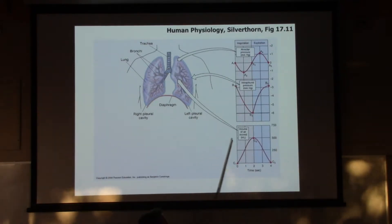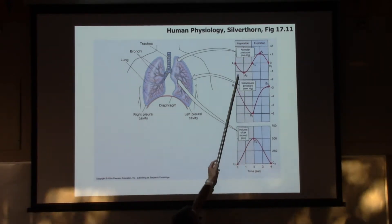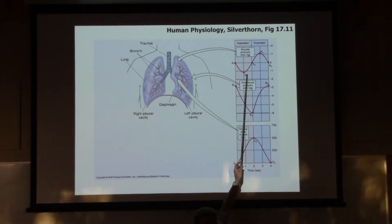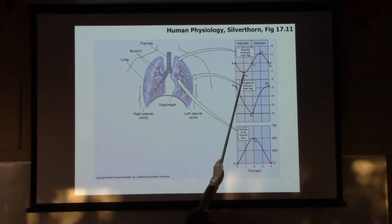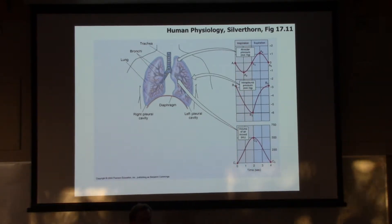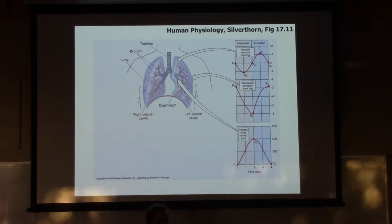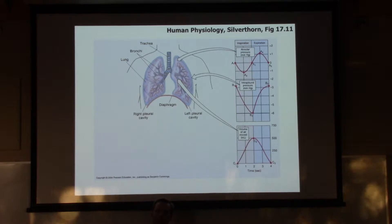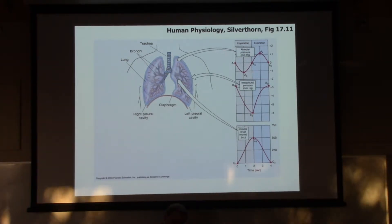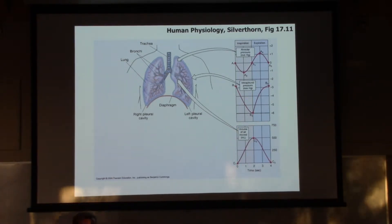So the first half of the figure, the gray part - we're inhaling. Air is flowing into our lungs because the pressure in our lungs is less than atmospheric pressure. So this pressure is a negative pressure compared to the atmosphere. The pressure in the interpleural space is decreasing as we keep expanding those lungs, creating a lower and lower pressure in that space.